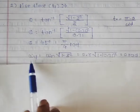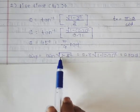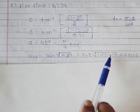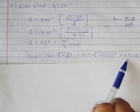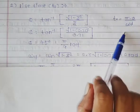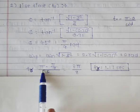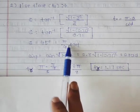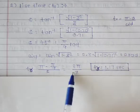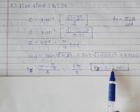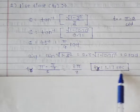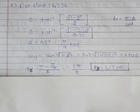45 degrees means in radian form it is π/4 radians. After that, find ωd using the formula: ωd = ωn × √(1 − ζ²). Solving this gives ωd = 2 rad/s. Now with both θ = π/4 and ωd = 2, putting into the rise time formula: tr = (π − π/4)/2 = 3π/8, which gives tr = 1.17 seconds.